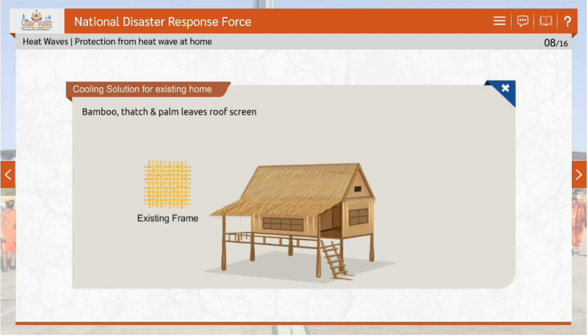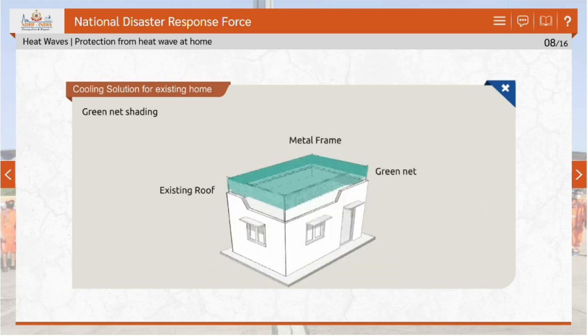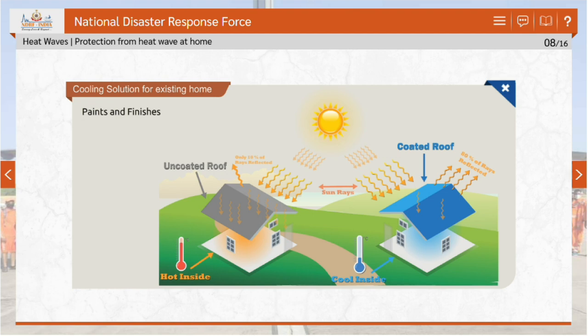Bamboo, thatch and palm leaves serve as traditional and eco-friendly roofing materials, offering a sustainable and natural way for cooling. Green net shading offers an effective cooling solution by providing shade and reducing heat transfer. Paints and wall finishes have an important role in solar absorption and thermal remittance of the facade; wall color and texture can help reduce temperatures by reducing solar heat gain.